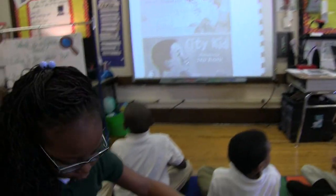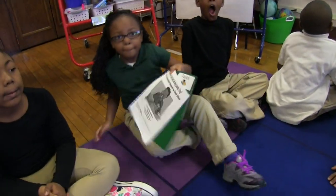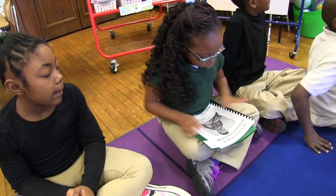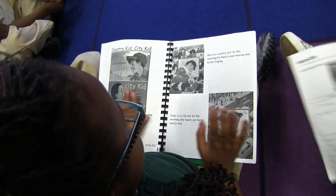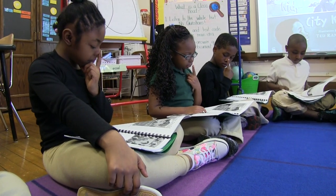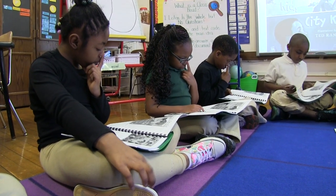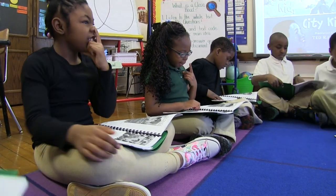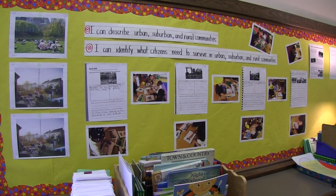The text we chose for this lesson is a piece of fiction: 'Country Kid, City Kid.' It supported the learning standard that the students were addressing today. It's also at the appropriate Lexile level for second grade at this time of year, and content-wise it supports the learning expedition.